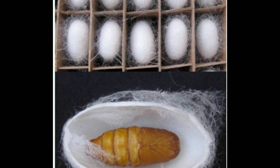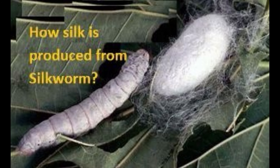This completes the life history of the silk moth: egg, larva, pupa, and adult. Now we will discuss about the production of silk — how silk is produced.